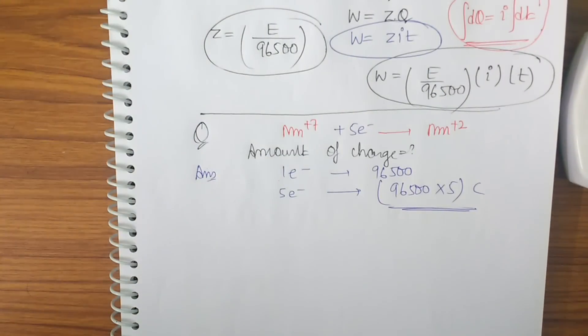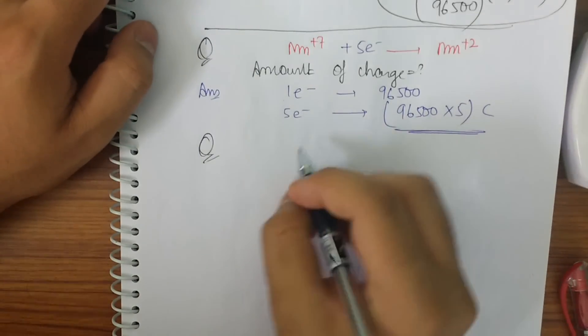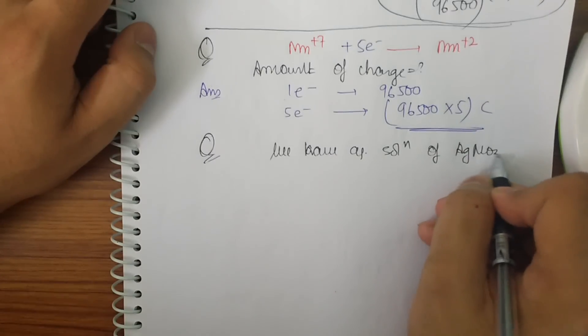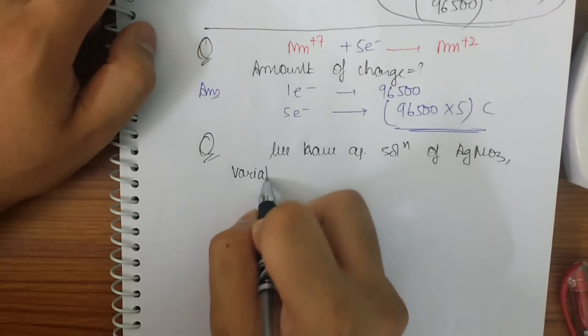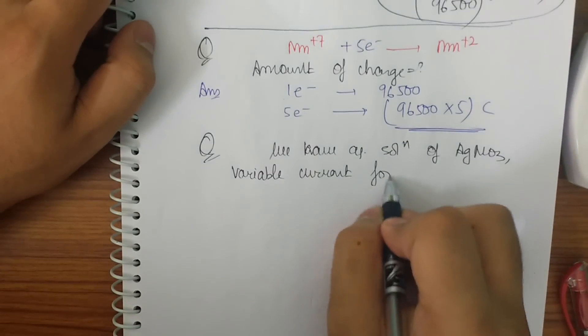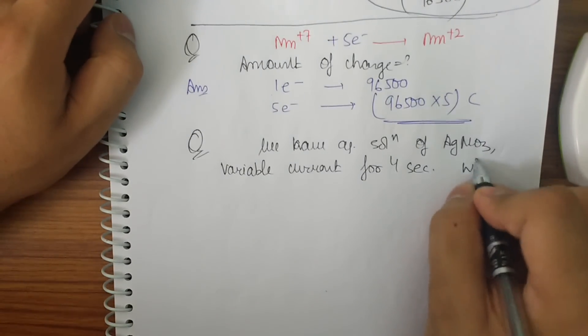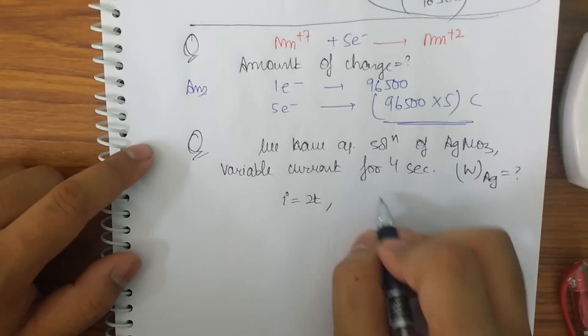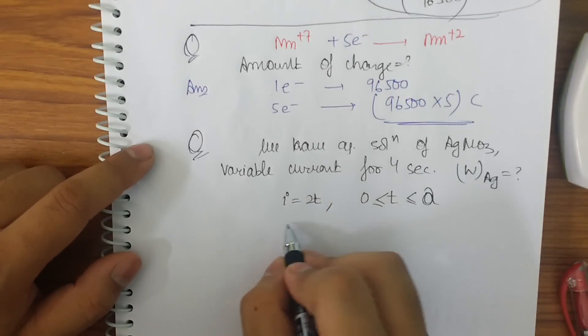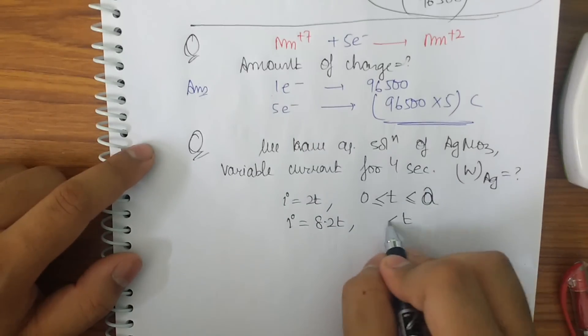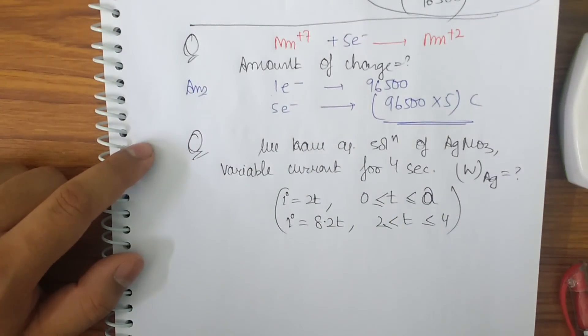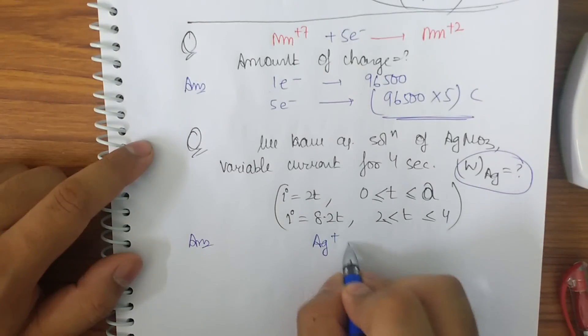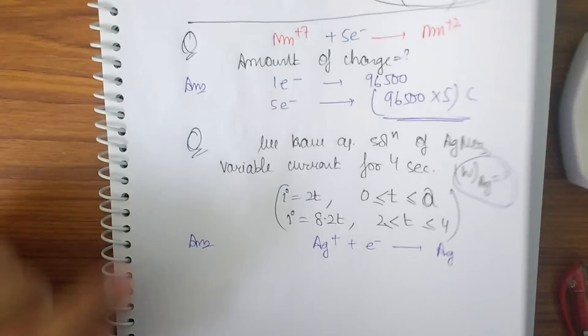Now let us go towards the question which is properly based on mathematics. So if a question is there, we have aqueous solution of AgNO3 and we have a variable current, variable current for 4 seconds. I have to calculate the amount of silver deposited. Given that i is equal to 2t from t 0 to 2 seconds, and i is equal to 8 minus 2t, t belongs to 0 to 4 seconds. Now what we have to find the amount of Ag deposited.